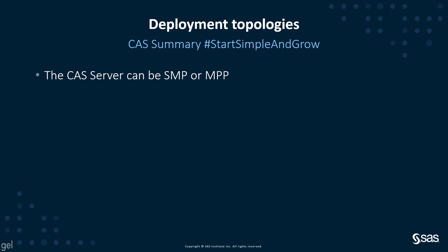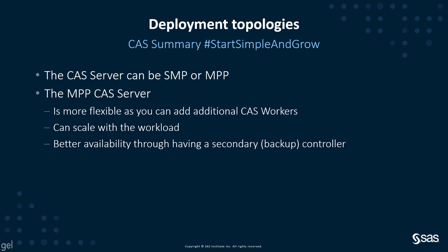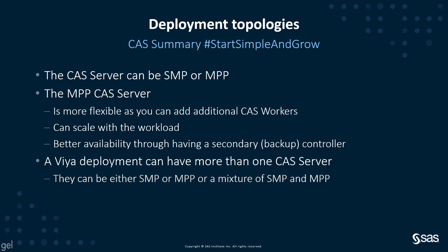In summary, the CAS server can be SMP or MPP. The MPP CAS server is more flexible, as you can add additional workers so it can scale with the workload. It also provides better availability through having a secondary or backup controller and the ability to have multiple workers. A Viya deployment can have more than one CAS server — either SMP, MPP, or a mixture of both. And finally, GPUs are supported.